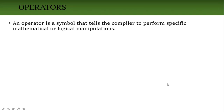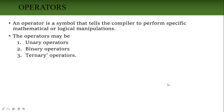Next we will go for operators. An operator is used to perform mathematical or logical operations — to solve mathematical or logical problems. Operators tell the compiler to perform a particular operation. There are three types of operators in C++: unary operator, binary operator, and ternary operator. Let's see them one by one.